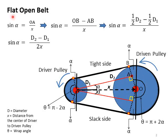In the case of a flat open belt, the angle of rotation of the driver pulley and driven pulley are both the same. For example, if the driver pulley is rotating in the counterclockwise direction, then the driven pulley will also rotate in the counterclockwise direction.